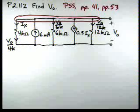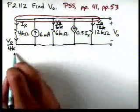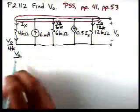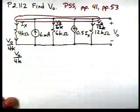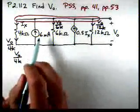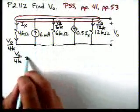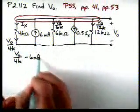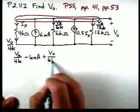So now let's apply Kirchhoff's current law to the top node. We'll sum currents leaving and set it equal to zero. So this current is leaving, V0 over 4K. This current's entering, so we have minus 6 milliamps plus V0 over 6K.